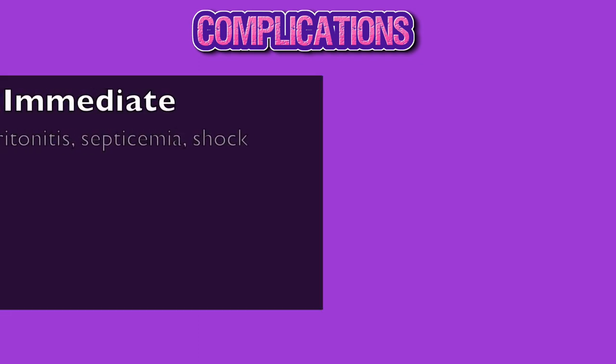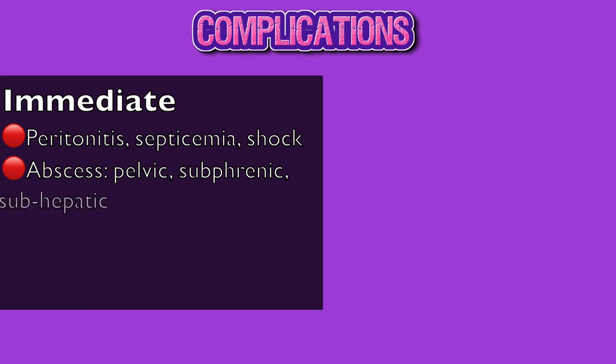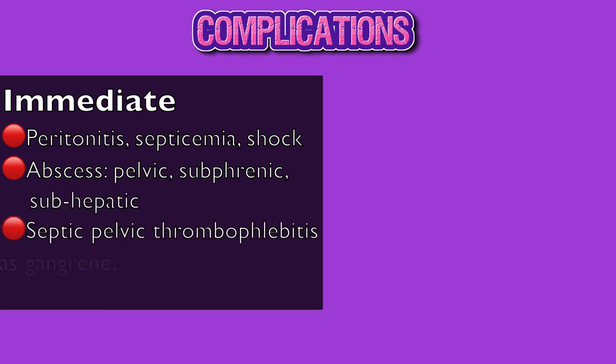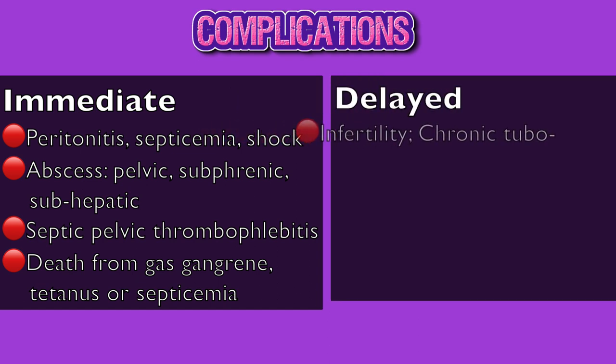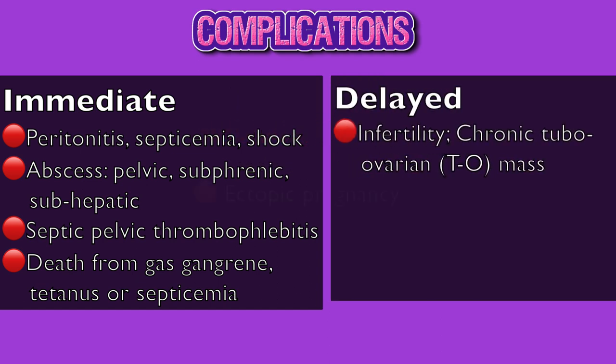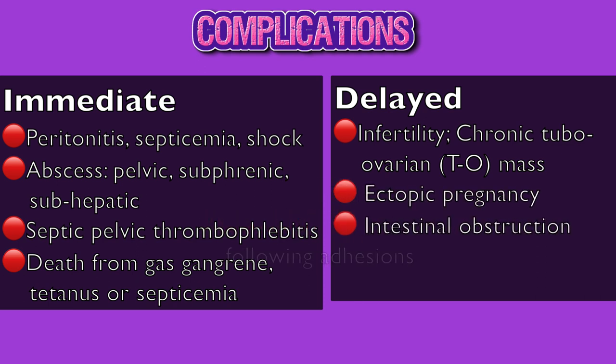The complications following puerperal sepsis can be divided into immediate and delayed. The immediate complications are pelvic or generalized peritonitis, septicemia, shock, abscesses which can be pelvic, subphrenic or subhepatic, septic pelvic thrombophlebitis, and death from gas gangrene, tetanus, or septicemia. Delayed complications are secondary infertility, chronic tubo-ovarian abscess or mass, ectopic pregnancy, and intestinal obstruction following adhesions.